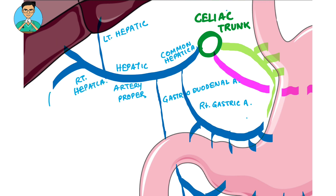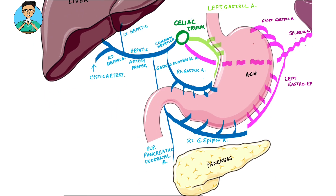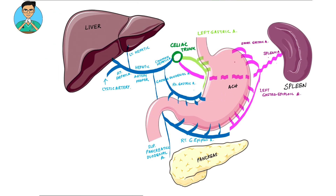From the right hepatic artery, another branch arises for the gallbladder, known as the cystic artery. This is how we summarize the blood supply of the stomach and, to some extent, the liver, spleen, and pancreas.